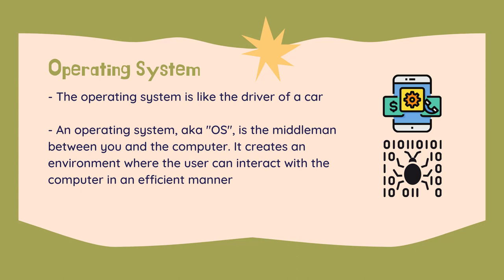The major software application on a computer is called the operating system. The operating system is like the driver of a car — while it might seem like it's only telling the computer what to do, it is in fact also interfacing with the different parts of it, as well as taking any new input, such as a map or instructions on where to go, which equates to other software, and performing these tasks to the best of its ability.